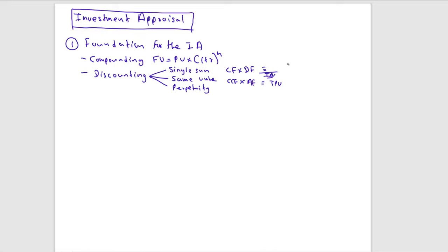For perpetuity — cash flows for the foreseeable future — the formula for total present value is: cash flow of year one divided by r. This gives you the total present value from year one to perpetuity.